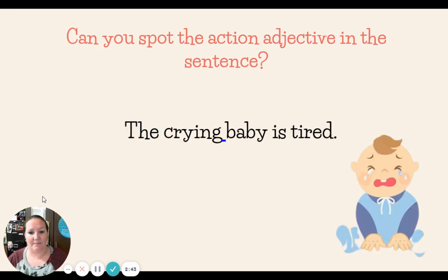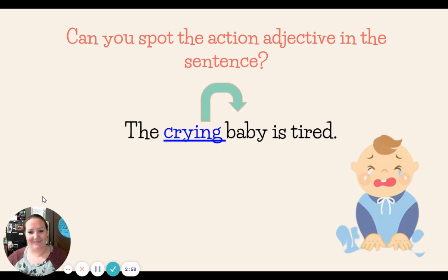Last one. The crying baby is tired. Can you spot the action adjective in the sentence? The crying baby is tired. Oh, I know how you feel, baby. That's right — crying. Cry was the verb. Added -ing. Crying describes the baby, how the baby is acting. They are crying.